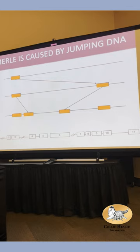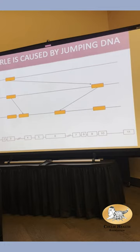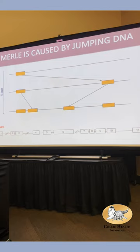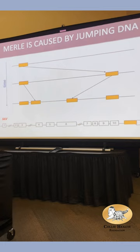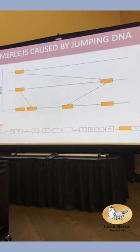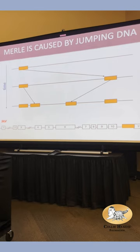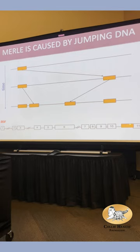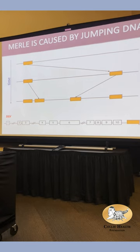SILV has 11 exons. Those exons get spliced together when making a protein — we take out the middle sequences and splice exon 1 to 2 to 3 to 4 and so on up to exon 11. This jumping gene inserts right at the boundary of exon 11. So when we try to splice from exon 10 to 11, we get confused and splice into the jumping DNA instead, then go into exon 11. So now it goes 9, 10, jumping DNA, 11.